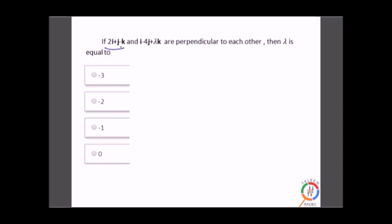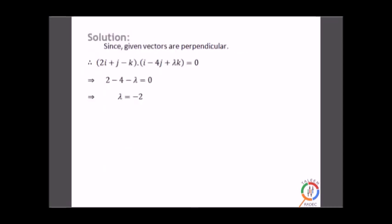If vectors 2i + j - k and i - 4j + λk are perpendicular to each other, then find λ. Since the vectors are perpendicular, their dot product equals zero. Computing: 2×1 + 1×(-4) + (-1)×λ = 0 → 2 - 4 - λ = 0 → λ = -2. This is the answer. When vectors are perpendicular, the dot product property gives zero, which we can use to find the unknown.